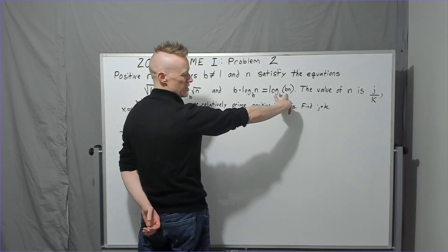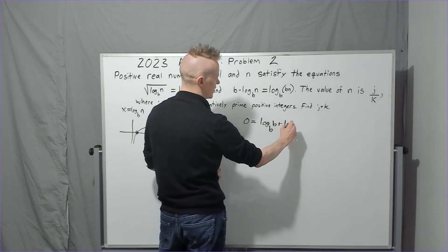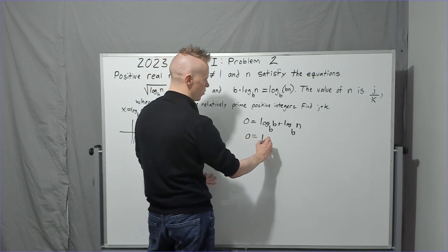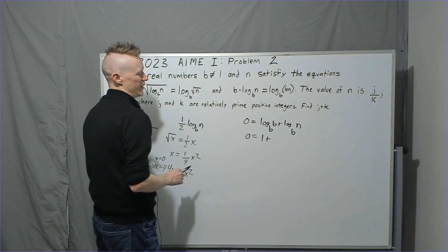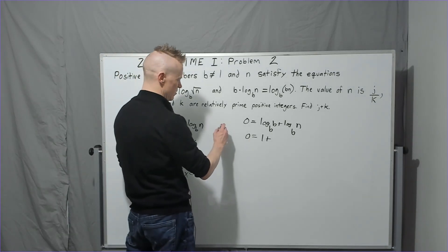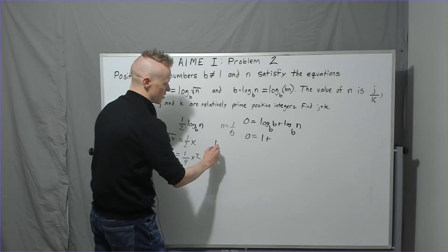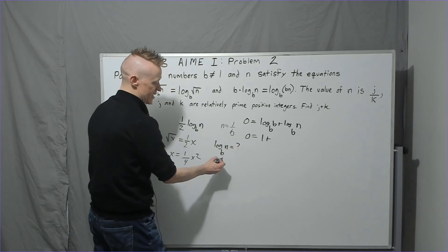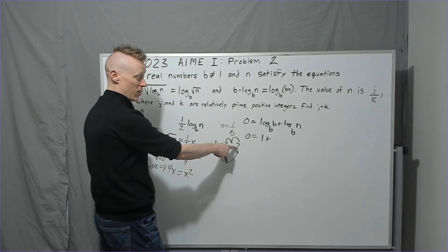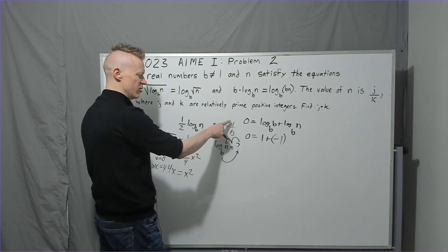You would get zero equals... And you should know to expand this. You would get log base b of b plus log base b of n. So log base b of b is one. So zero would equal one plus log base b of n. This would have to equal negative one. And the only way it could equal negative one is if n was equal to one over b. Because basically, the log of b to the n is asking you a question: b to some power is equal to that value. And I need that sum power to be negative one in order for it to equal zero. So b to the negative one is one over b, and that's got to be n.